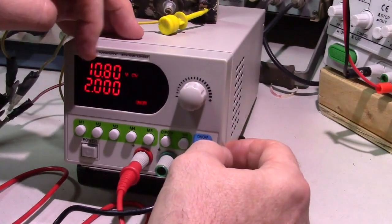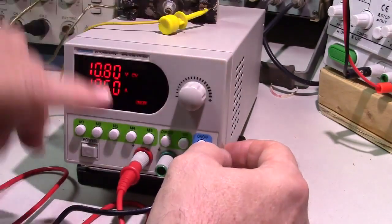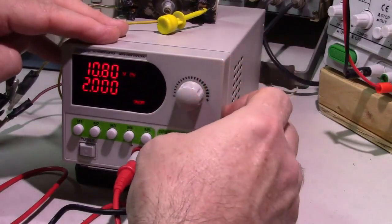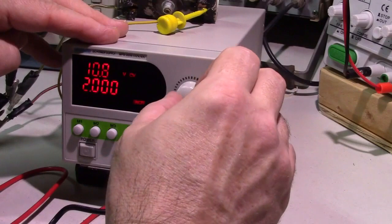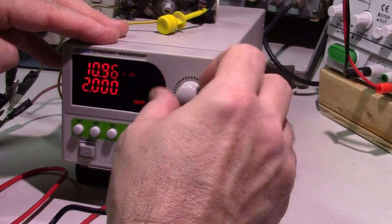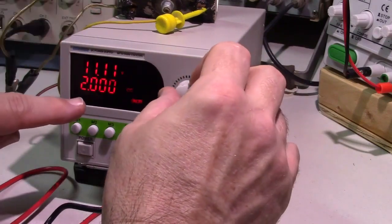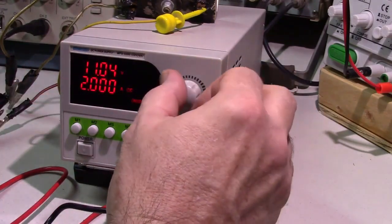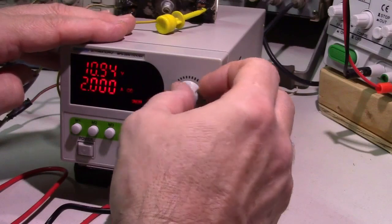The voltage is set at 10.8, and notice the constant voltage is on. If I change the voltage and keep increasing it, you notice the current stays on and the constant current indicator comes on.